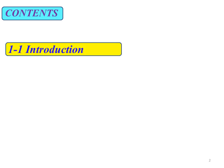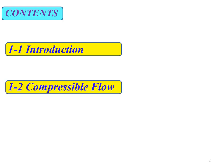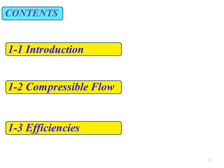In terms of content, this chapter consists of three subtopics. The first topic is about an introduction to turbo machinery. The second is about compressible flow, and the third one is about the efficiencies of a turbo machine.